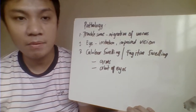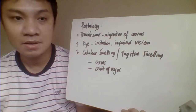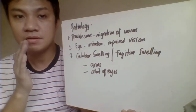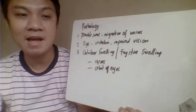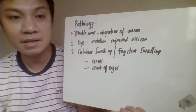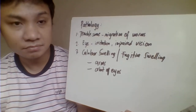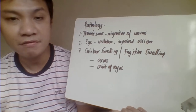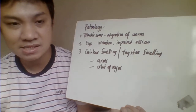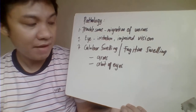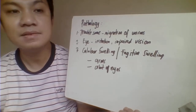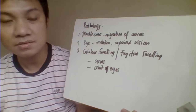Disease pathology of Loa loa infection includes troublesome sensations as the parasite migrates, especially when crossing the bridge of the nose. Eye involvement results in eye irritation or, in worse cases, blindness. Calabar swelling or fugitive swelling is an allergic reaction — a transient pruritic itchiness and inflammation primarily affecting the arms or the orbit of the eyes, which can swell as large as a hen's egg.